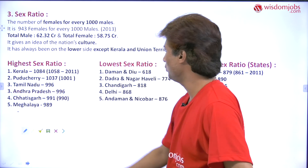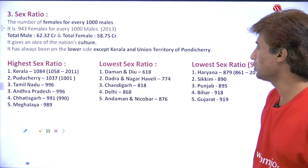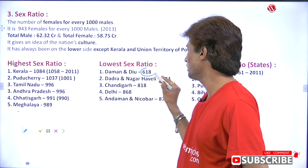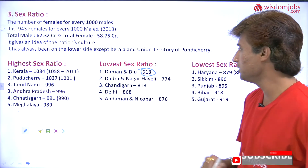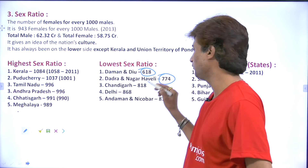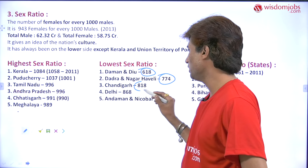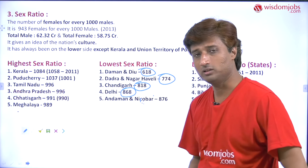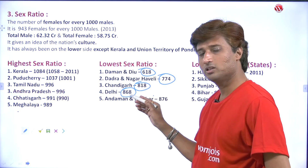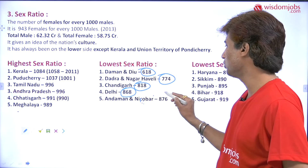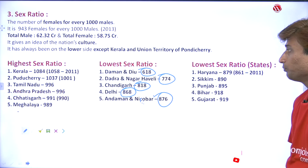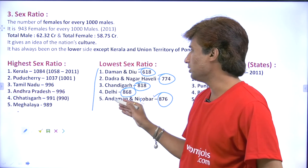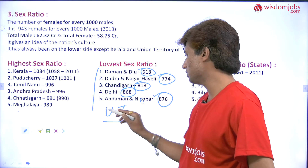Now the lowest sex ratio. All the lowest are union territories. Daman and Diu has 618 females per 1000 males. Dadra and Nagar Haveli has 774. Chandigarh has 818. Delhi, the national capital territory, has 868 females per 1000 males. Andaman and Nicobar has 876 females per 1000 males. Overall, union territories tend to have a lower sex ratio.